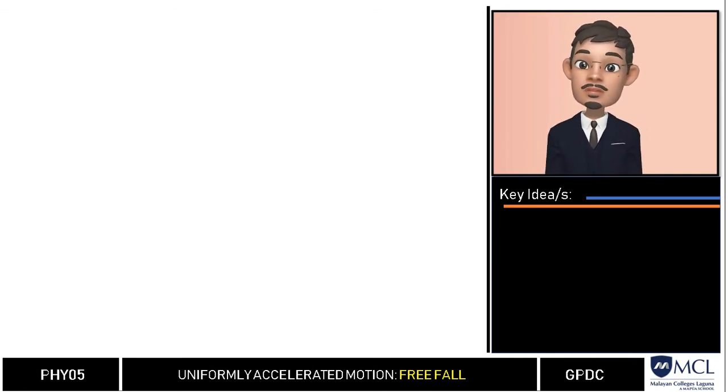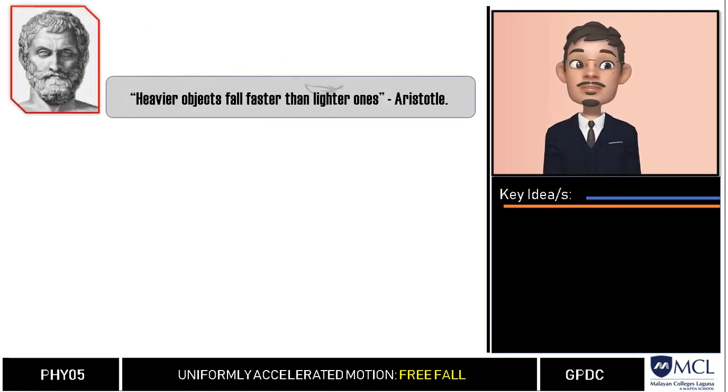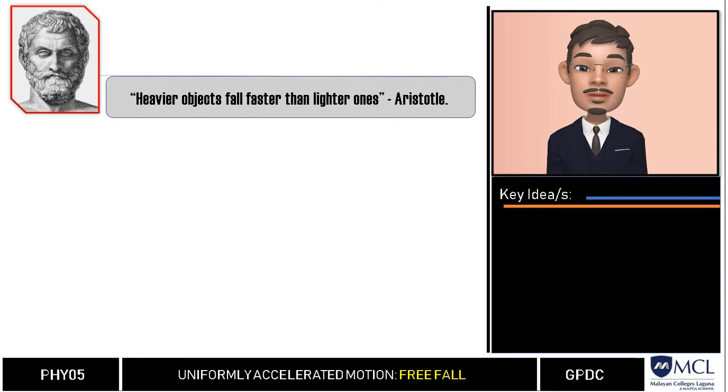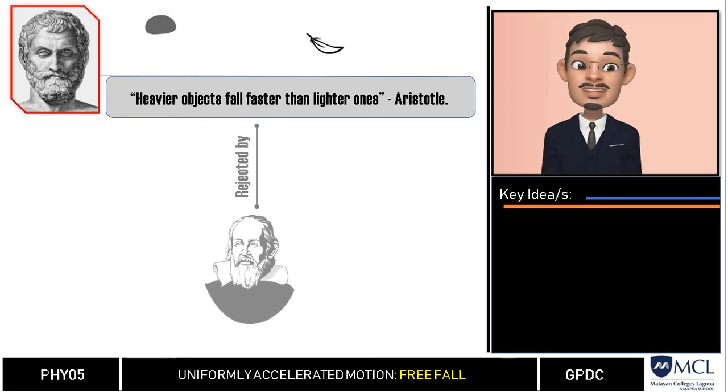We remember in our last video that during the 4th century BC, Aristotle suggested that heavier bodies fall faster than lighter ones. This was proven incorrect by Galileo Galilei when he proposed a contrasting idea about free fall motion.